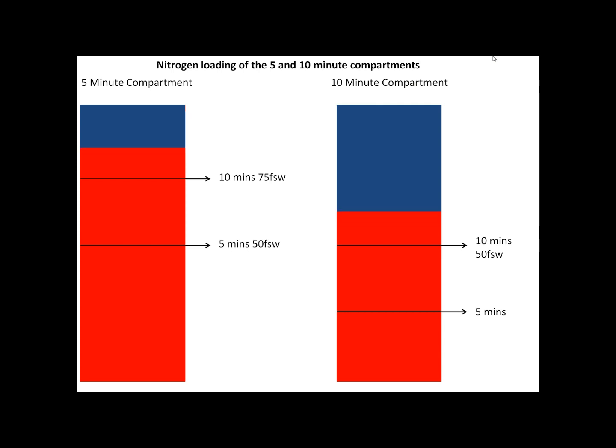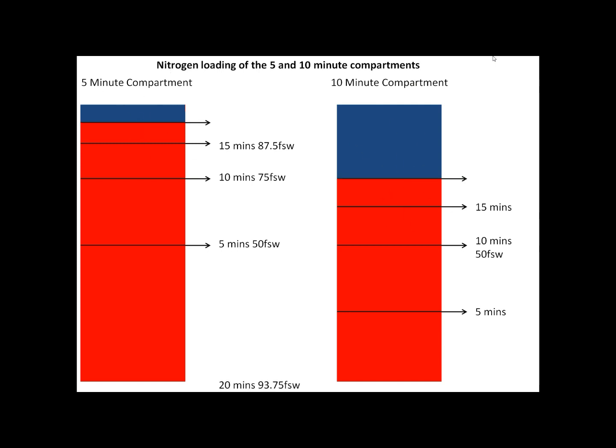Watching the nitrogen loading as another 5 minutes passes — at 15 minutes, the 5-minute compartment has done three half times, and the 10-minute compartment is somewhere between one and two half times. At 20 minutes of dive time, the 5-minute compartment would have 93.75 feet of seawater nitrogen loading, while the 10-minute compartment would only have 75 feet. So our faster compartment — the 5-minute one — has more nitrogen in it than the slower 10-minute compartment.